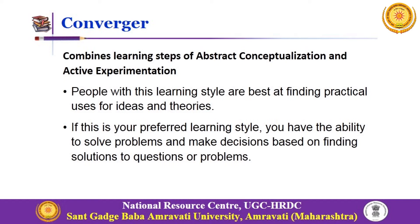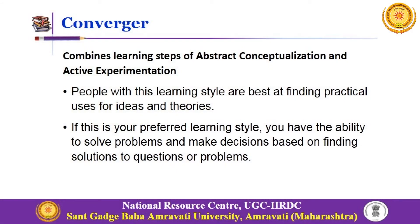The combination of grasping and transforming tendencies gives the style of learning. If you are high on abstract conceptualization and active experimentation compared to their counterparts, your learning style is called converger. People with this learning style are best at finding the practical uses of ideas and theories, and have the ability to solve problems and make decisions based on finding solutions to questions.